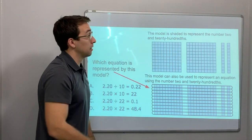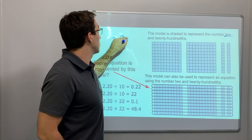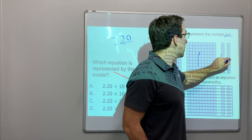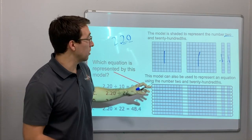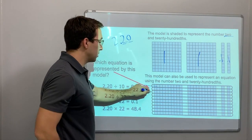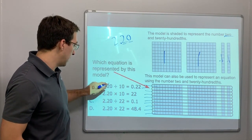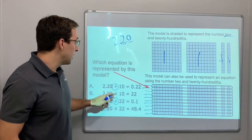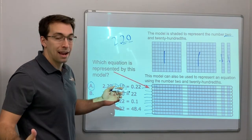This model is shaded to represent the number two and twenty hundredths, 2.20. One, one, point one, and point one. Which equation is represented by this model? It's the same thing. We had this two questions ago. Two point two. And notice that it's being divided across evenly. 1, 2, 3, 4, 5, 6, 7, 8, 9, 10. Everything's the same here. Divided by, how many is it divided by? It's divided by ten because there's ten circles, ten groups. Here's our answer: A.